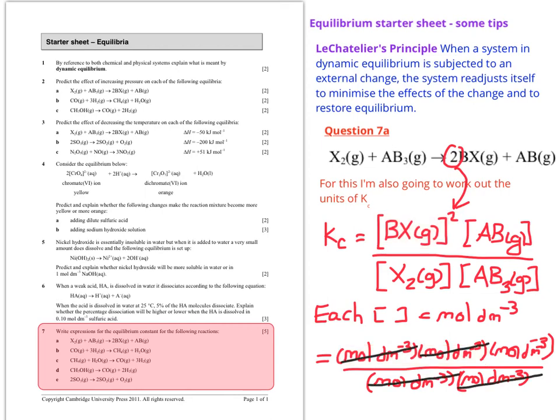If I cancel top and bottom I now know that I've just got moles per decimeter to the minus 3. That gives me my final units.